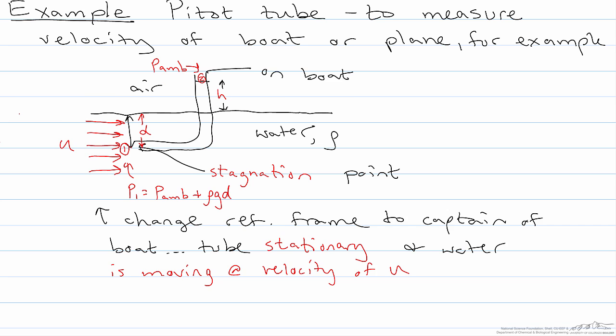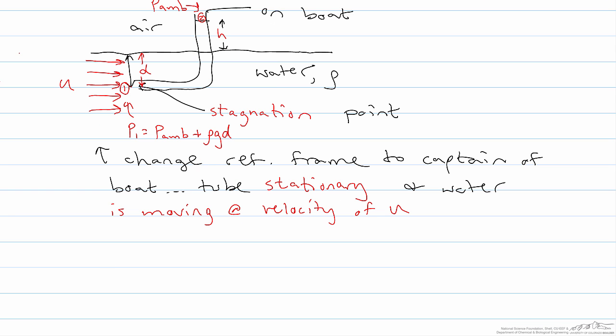So if we apply the Bernoulli equation to this fluid, then u1 squared over 2 plus p1 over rho plus gz1 is equal to u2 squared over 2 plus p2 over rho plus gz2.